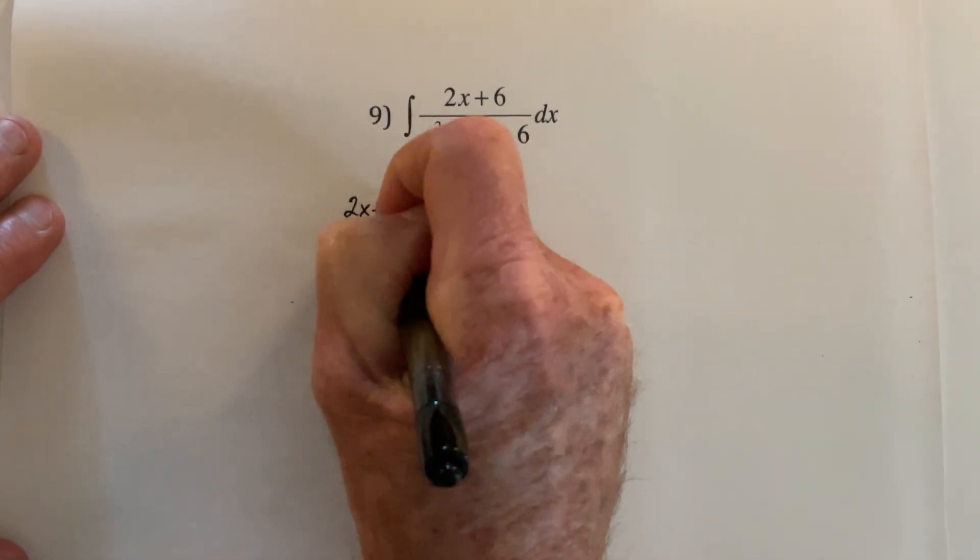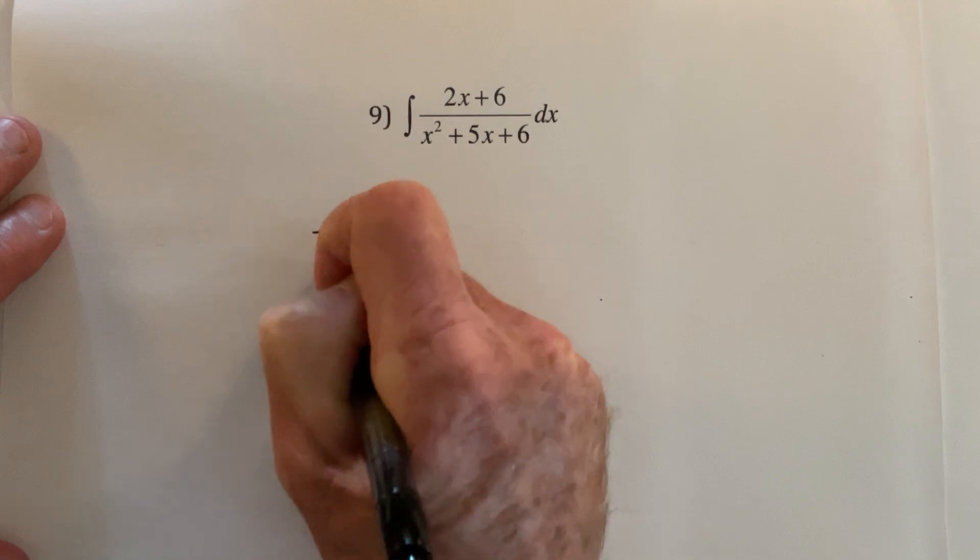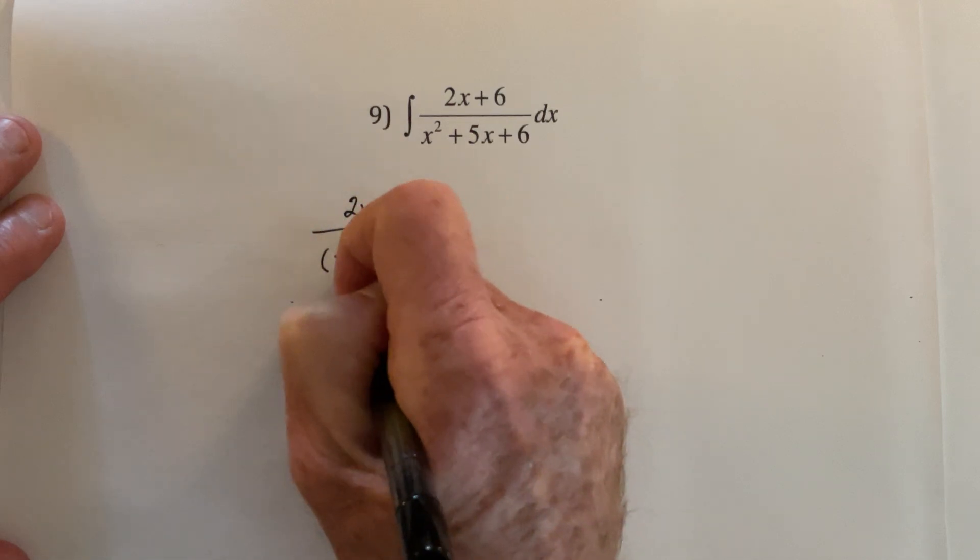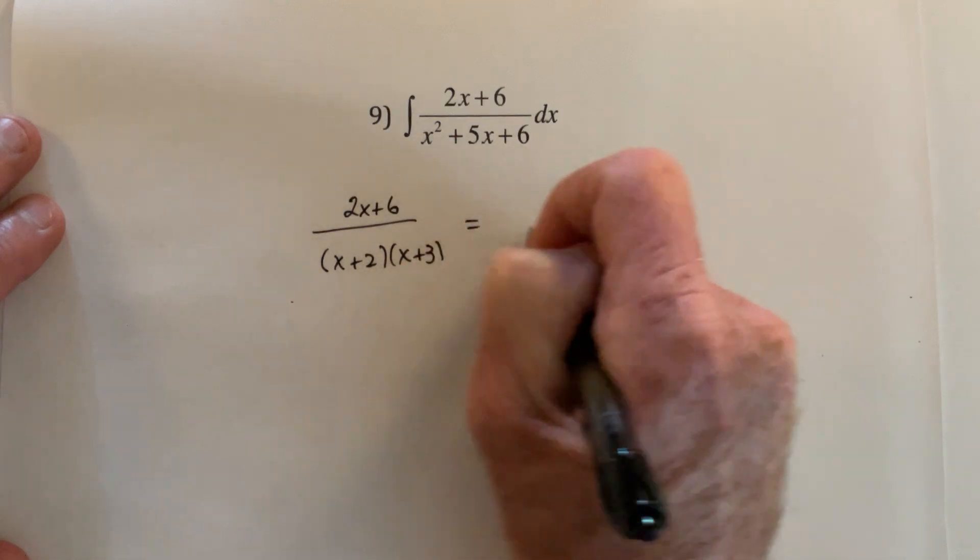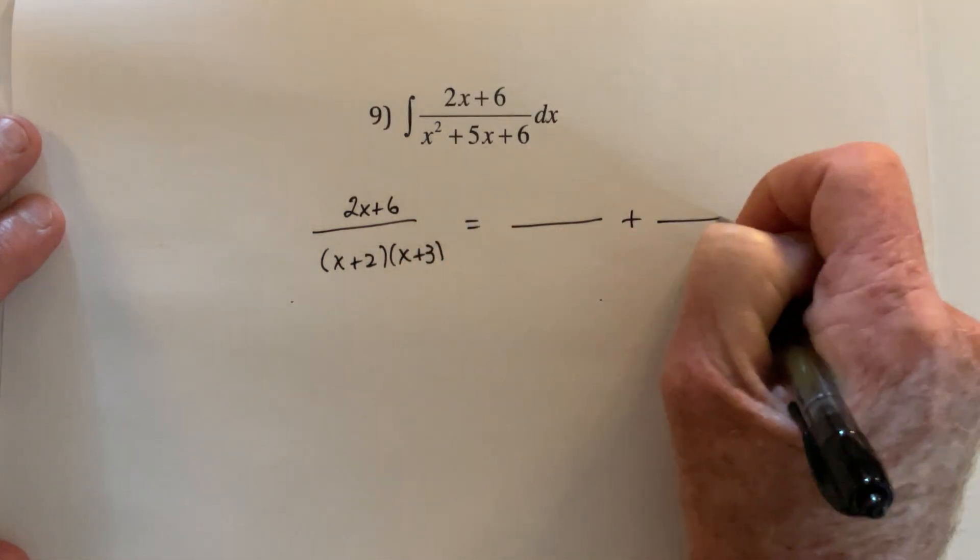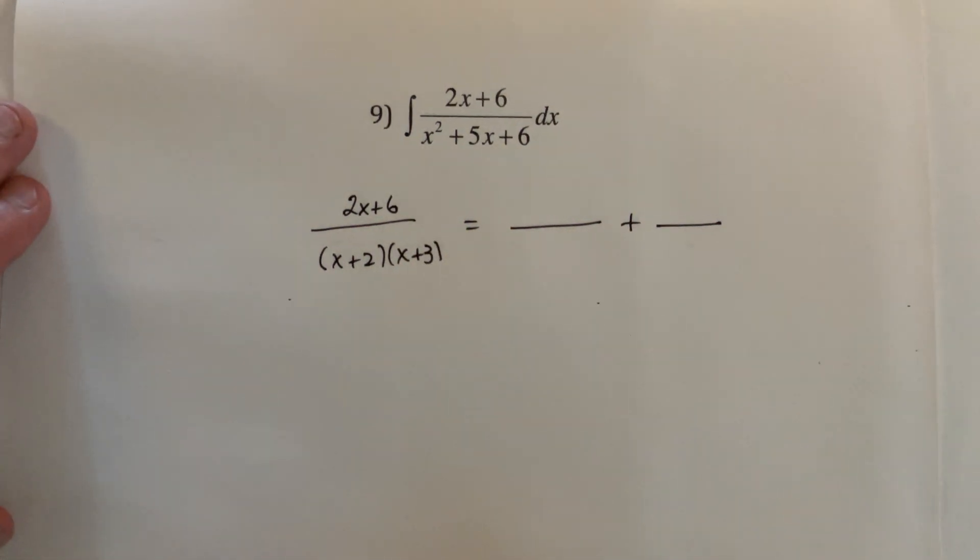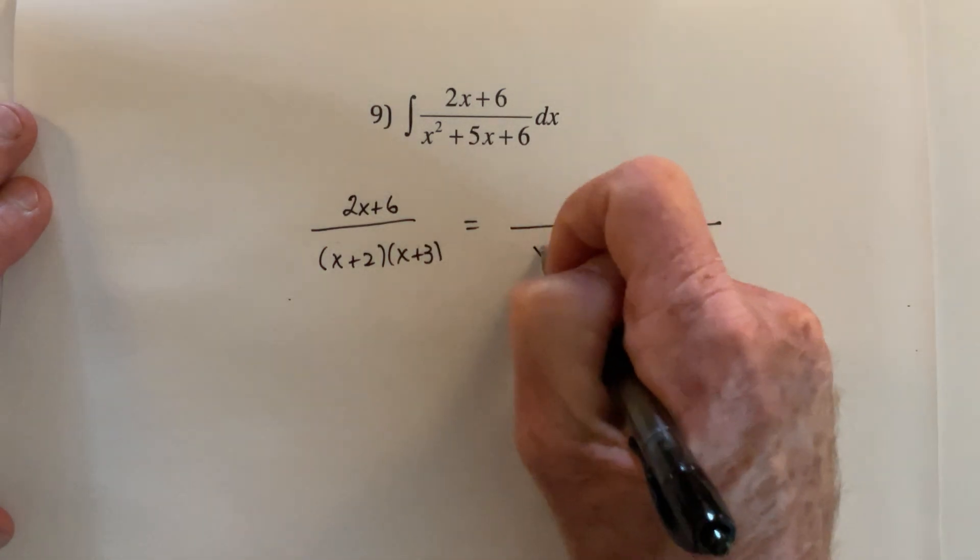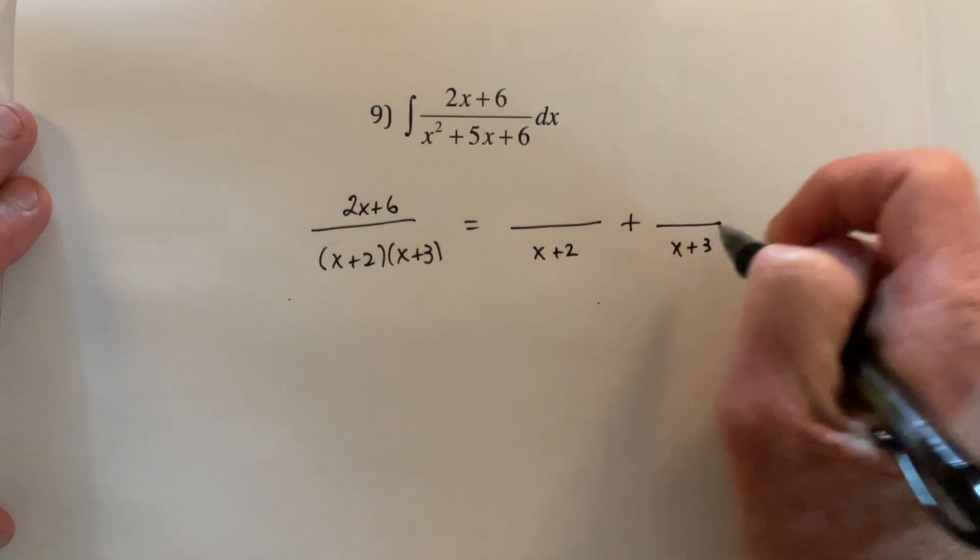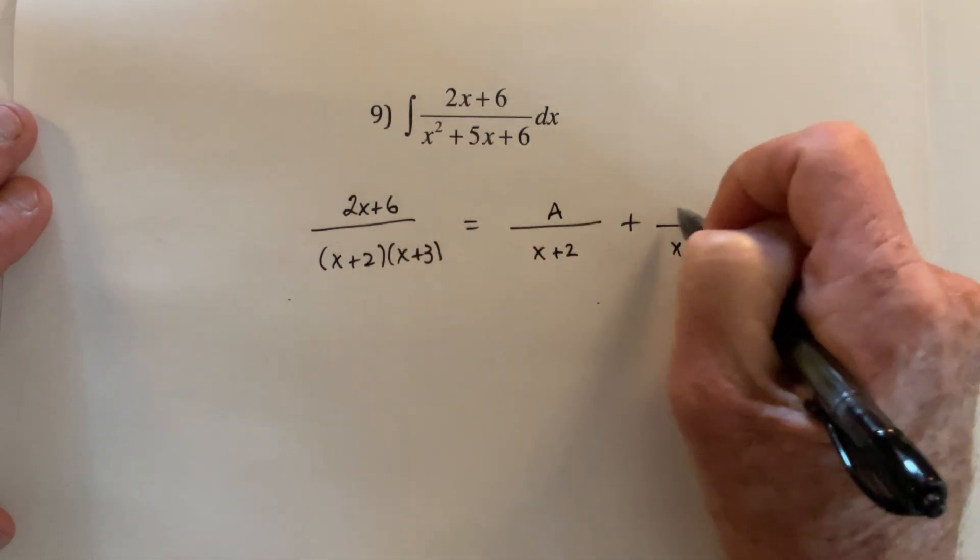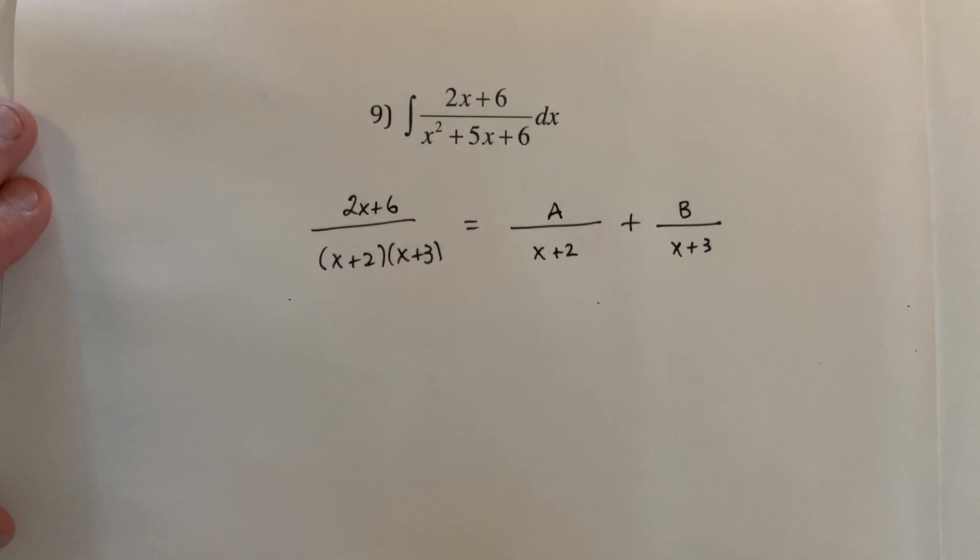Okay, so it was a 2x plus 6 over the bottom factors as x plus 2 times x plus 3. And then I'm going to use partial fractions and see if I end up with the same answer. So this could be the x plus 2 in the denominator, this can be the x plus 3, and then there's going to be some number A here and some number B here.